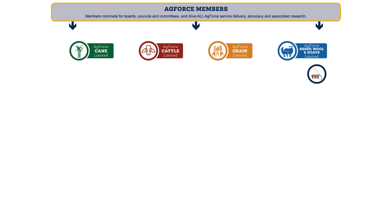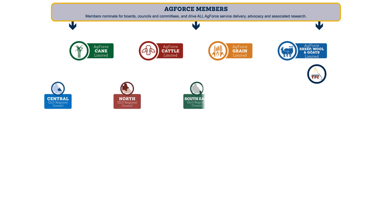Then there is our young producers council. The next groups are five elected regional councils: central, north, south east, southern inland and south west.